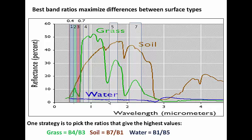So in summary, here are my choices. For grass, I went band 4 to 3. For soil, I went band 7 over band 1. And for water, I went band 1 over band 5. Maybe pause the video now. Maybe jot these down. We're going to be using these once we get into the ArcMap project.